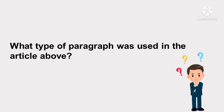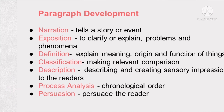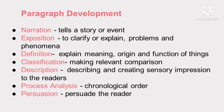What type of paragraph was used in the article above? It is expository. The paragraph explains how the community pantry spread in the Philippines by providing examples and instances. Paragraph development begins with the formulation of ideas. Topic sentences often show the main idea of the author. Narration, exposition, definition, classification, description, process analysis, and persuasion are the seven types of paragraph development that an author may use in building his argument or ideas.